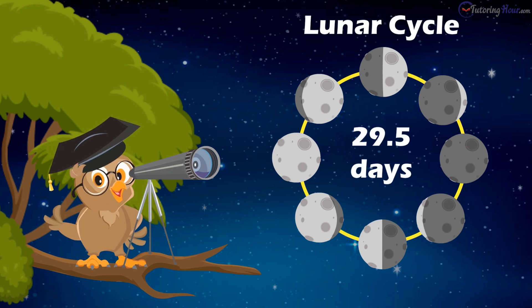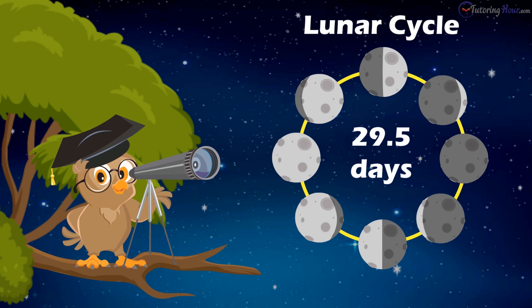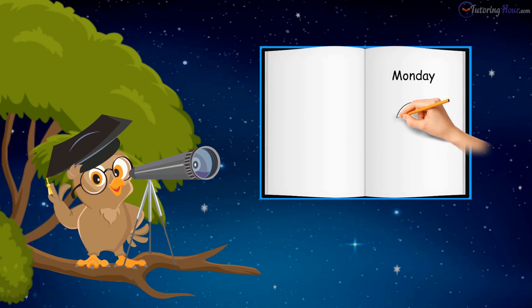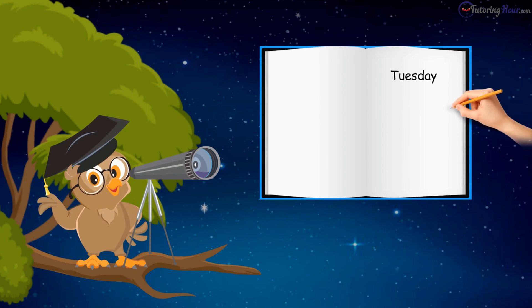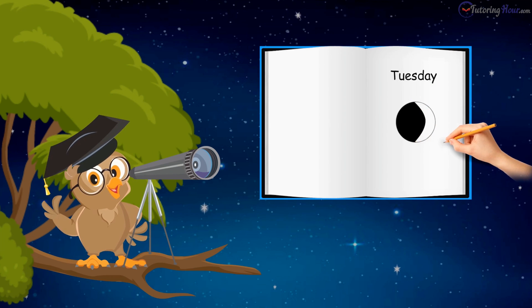The moon takes about 29 and a half days to pass through all of its phases. Get your books and pencils out, observe the night sky, and note down the phases of the moon.